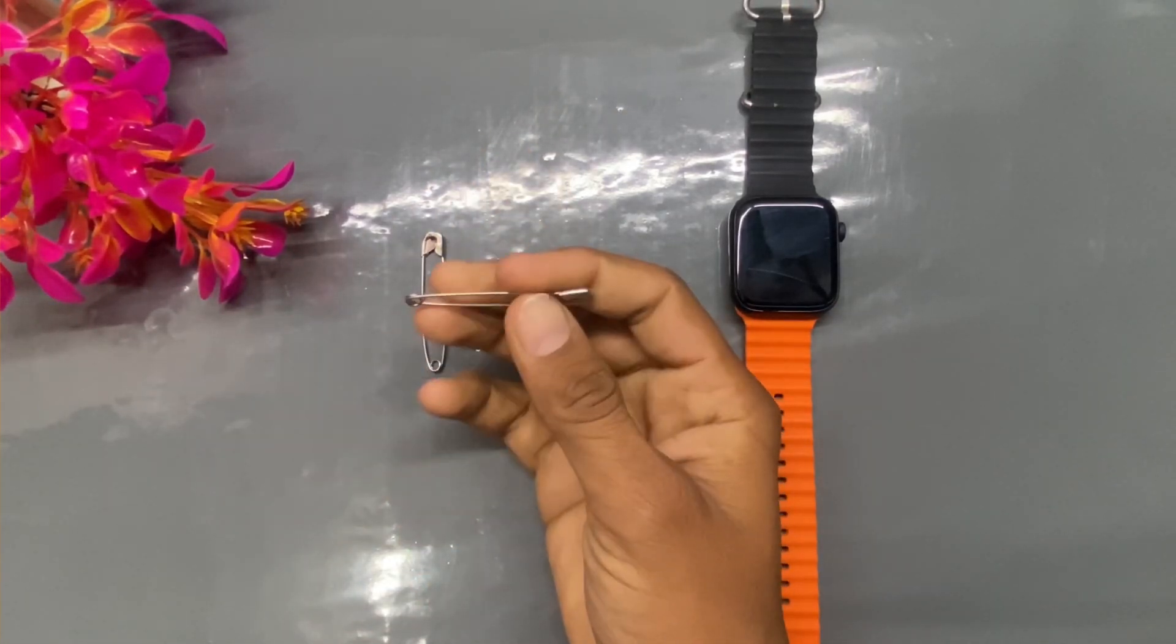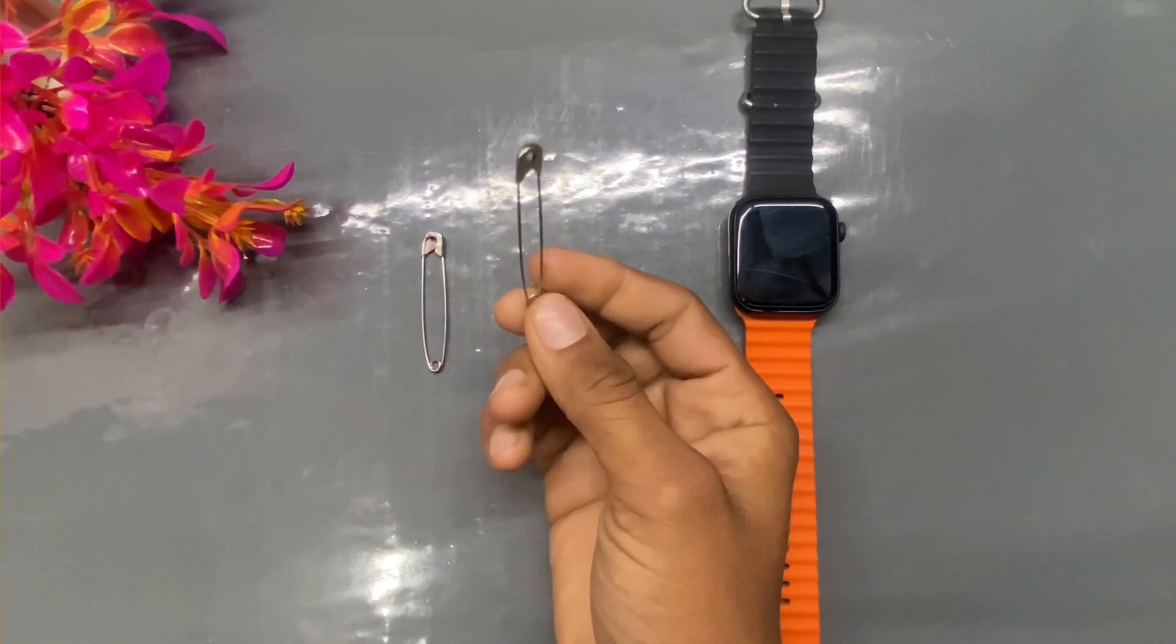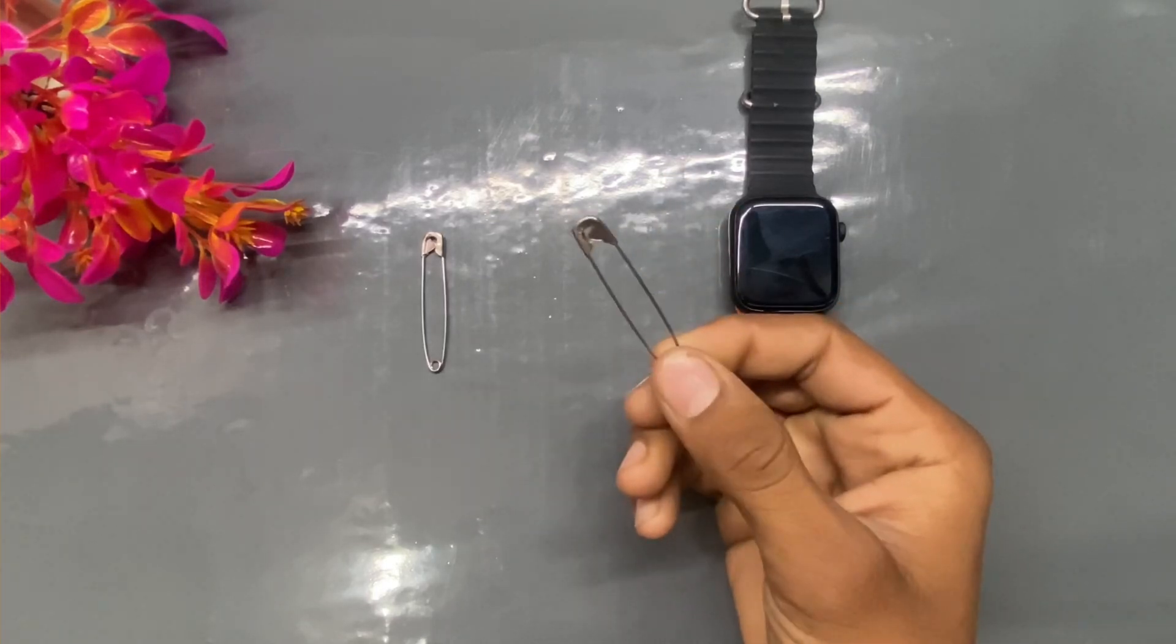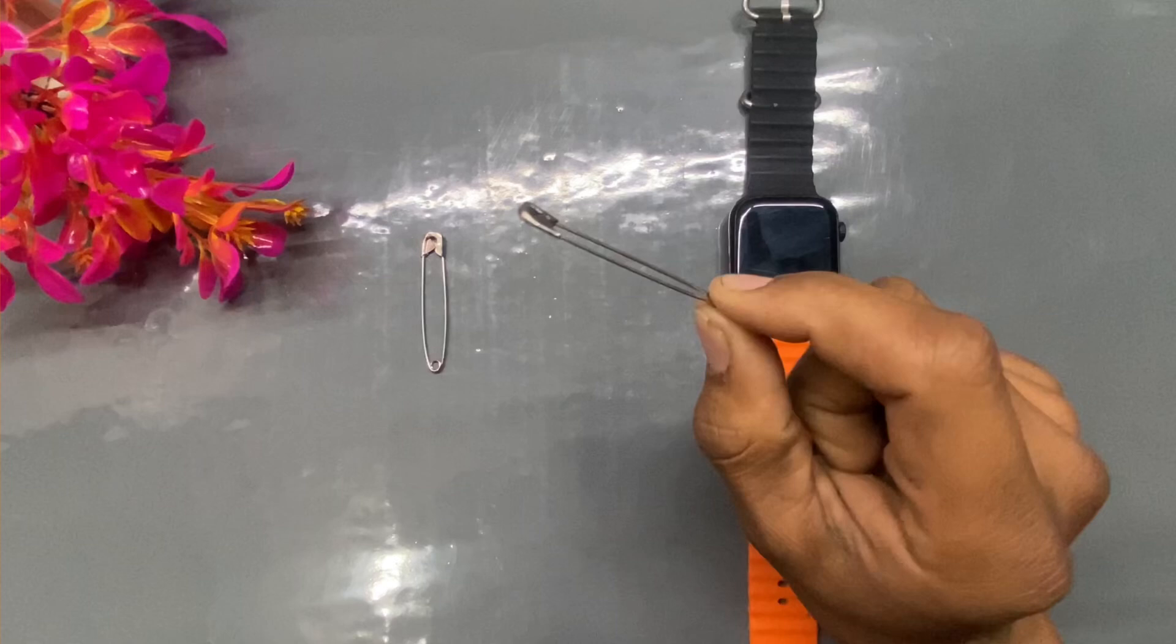So let's start the video. Before starting, if you're new to the channel, please subscribe and like the video. First of all, pick a safety pin. The length of every safety pin is almost two centimeters.